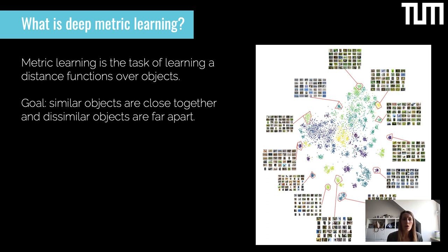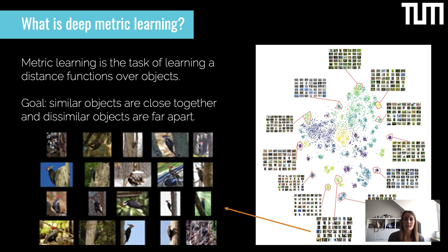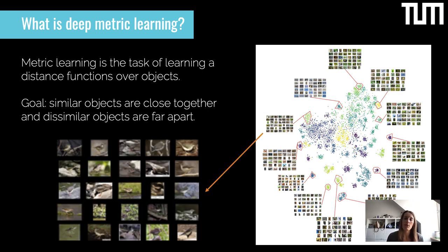The goal is that similar objects are closer together and dissimilar objects should be far apart — so the person with blonde hair should be far apart from the person with brown hair. For example, in this image on the right we can see lots of clusters from the CUB 200-2011 dataset, which consists of many different bird species. A bird with a red head is well separated from a cluster of brown birds.